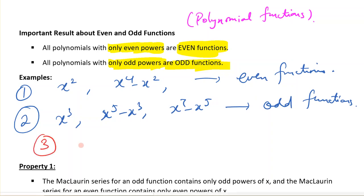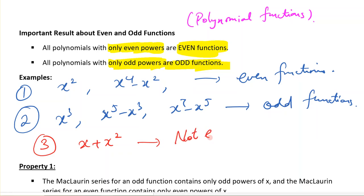Now let's think about this one: if you have x + x², is that an even polynomial or odd? Sometimes your function might be neither even nor odd. Because if you try to check the property f(-x) = f(x) or f(-x) = -f(x), neither definition would work. So these are neither even nor odd.